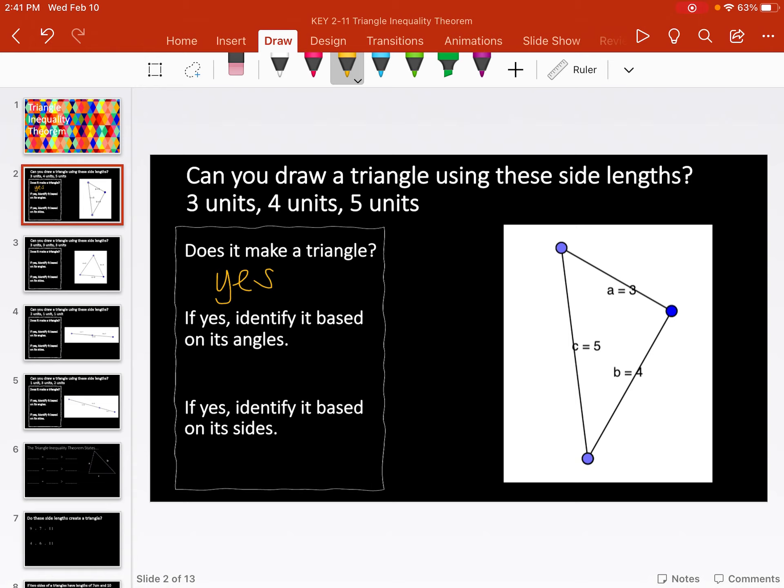If it does, then we need to identify it by its angles and by its sides. When we're identifying by angles, it can either be acute, right, or obtuse. And when we're identifying by the side lengths, that would be scalene, isosceles, and equilateral.